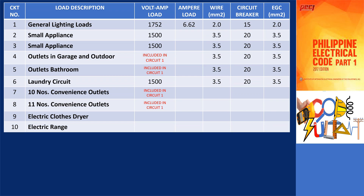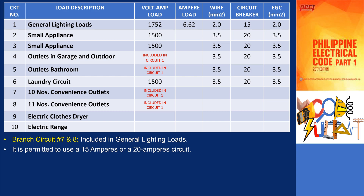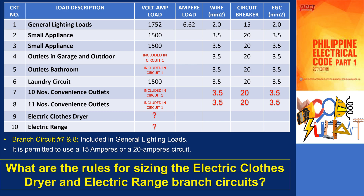Going back to the summary of circuits, the volt ampere loads for the garage and outdoor circuits and bathroom circuits are included in the general lighting loads, and also for the receptacle outlets in general areas, as shown in circuits 7 and 8. In determining the size of the circuit conductor, it is permitted to use a 15-ampere or 20-ampere circuit. For this project, we will use 20-ampere circuits. Hence, use 3.5 square millimeters for circuit conductors and equipment grounding conductors. What are the rules for sizing the electric clothes dryer and electric range branch circuits?